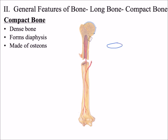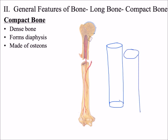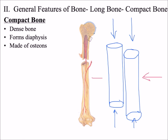These osteons are long cylindrical structures that run the length of the diaphysis. Because they are made up of osteons that run the entire length of the diaphysis, compact bone is good at withstanding compression forces — forces in this direction. Compact bone is not good at withstanding forces in this direction.